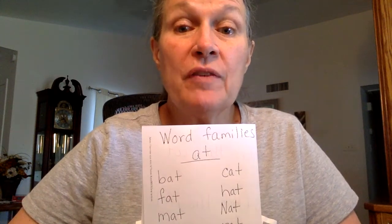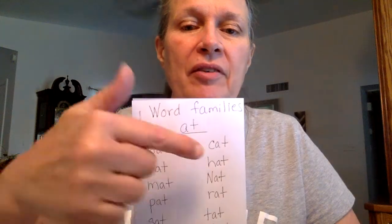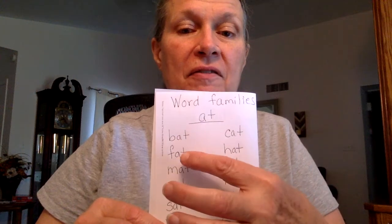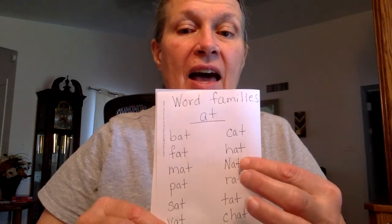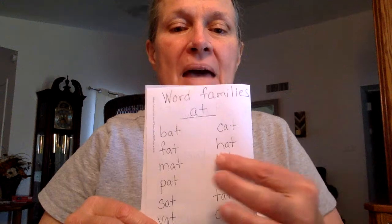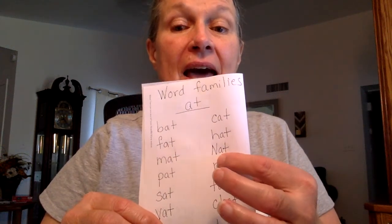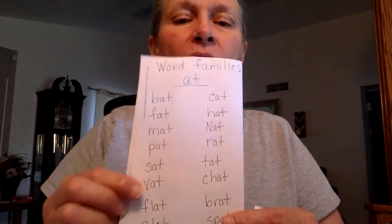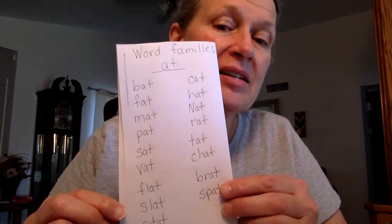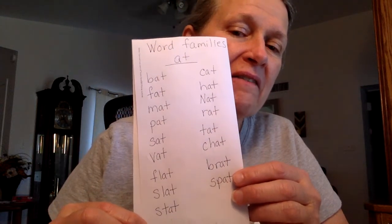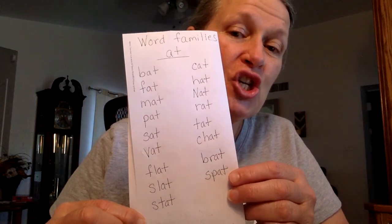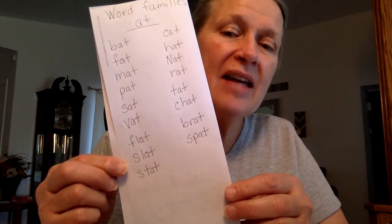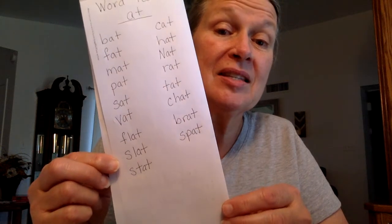The first word family is AT. We have bat, cat, bat, hat, mat, napped, pat, rat, sat, tat, that, chapped, flapped, brapped, slapped, spat, stat.